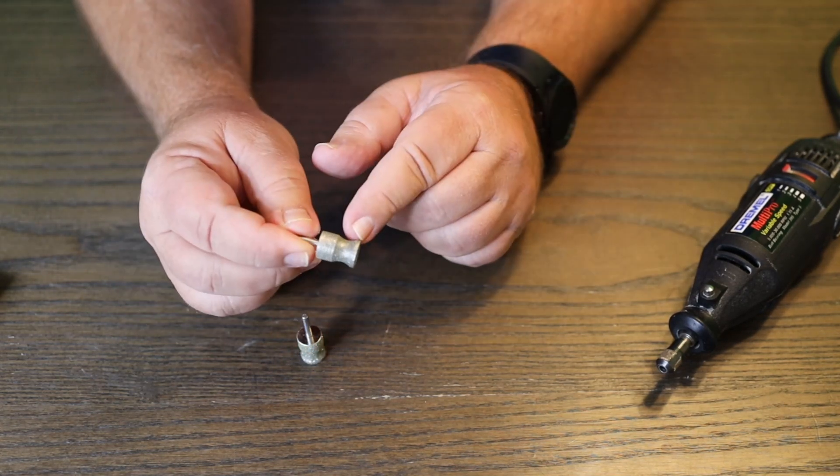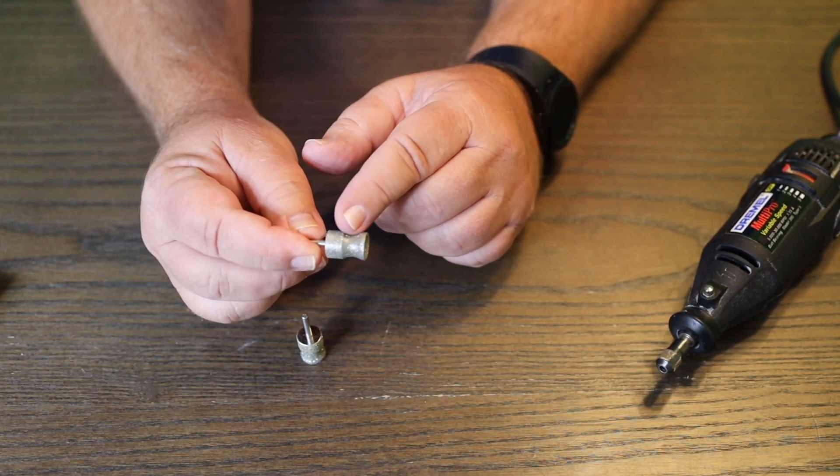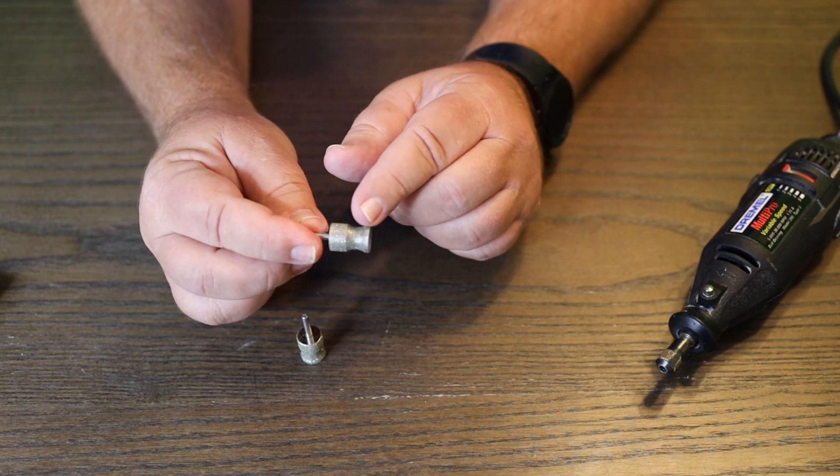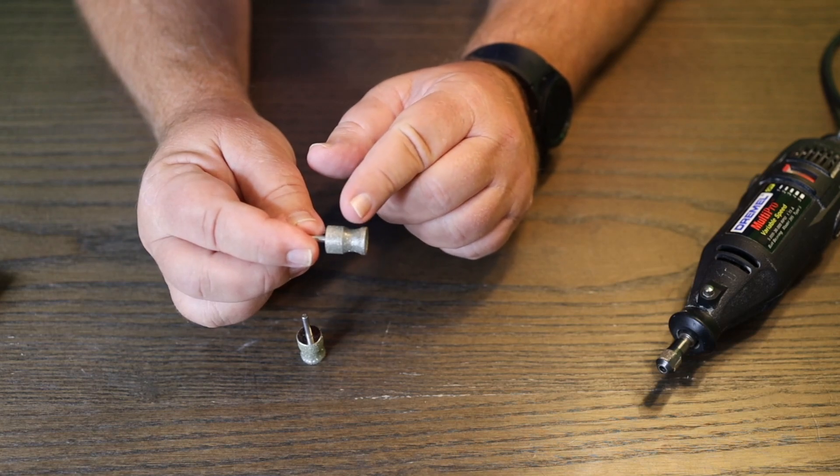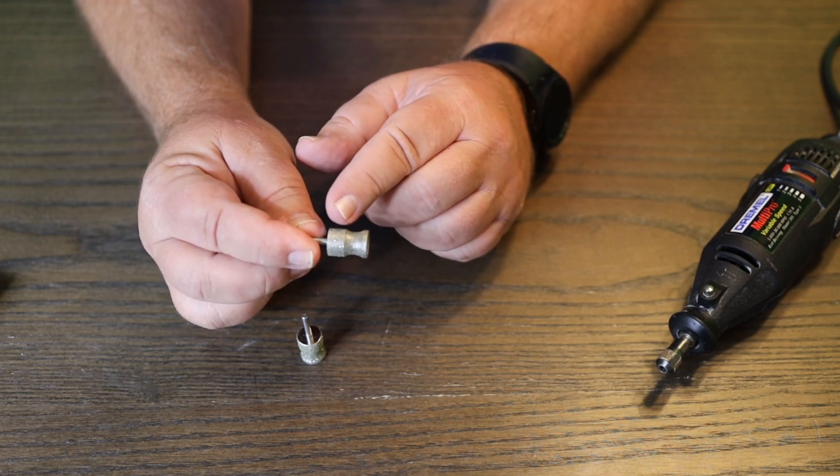This one pretty much the same thing, only it's more coarse and it's made to grind a lot faster and quicker. So if you want a fast way, you need to be a little more careful with this one because it will grind it a lot faster because it's more coarse.